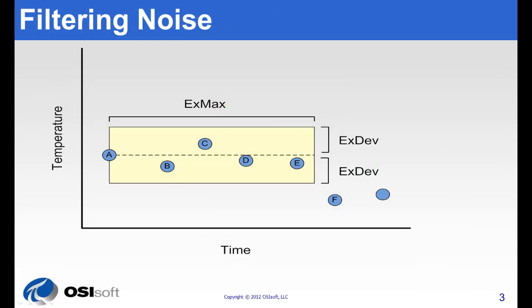The first test of these two, of exception and compression, is exception. Exception reporting takes place on the PI interface node before the value is ever sent to the PI server.